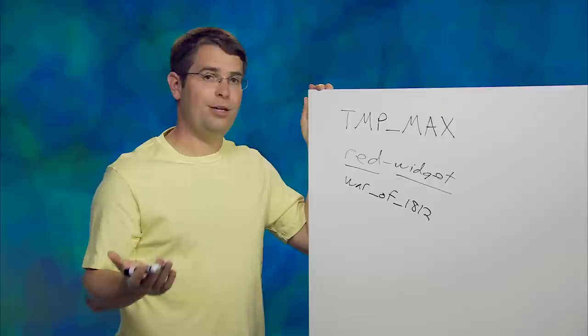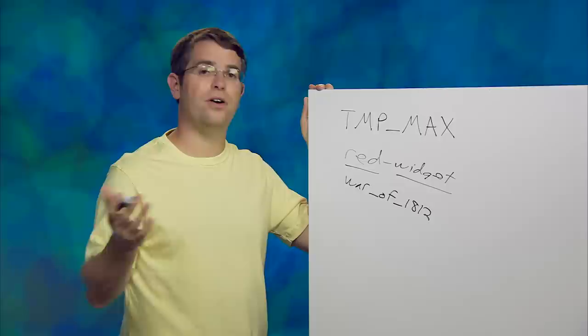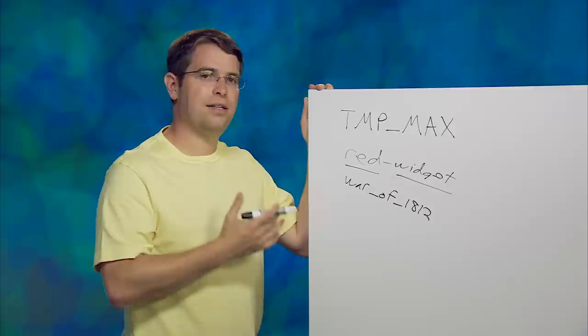For example, Wikipedia has a lot of pages that say war underscore of underscore 1812. That doesn't keep Wikipedia from ranking because there's PageRank, there's proximity, there's title, there's all the other signals that we use, over 200 of them.